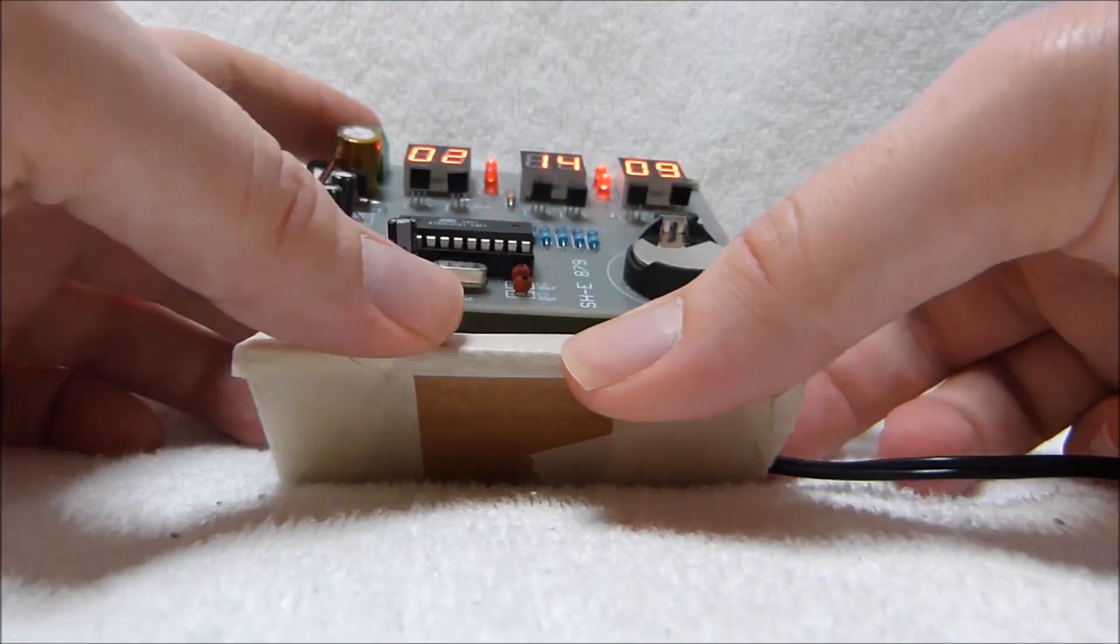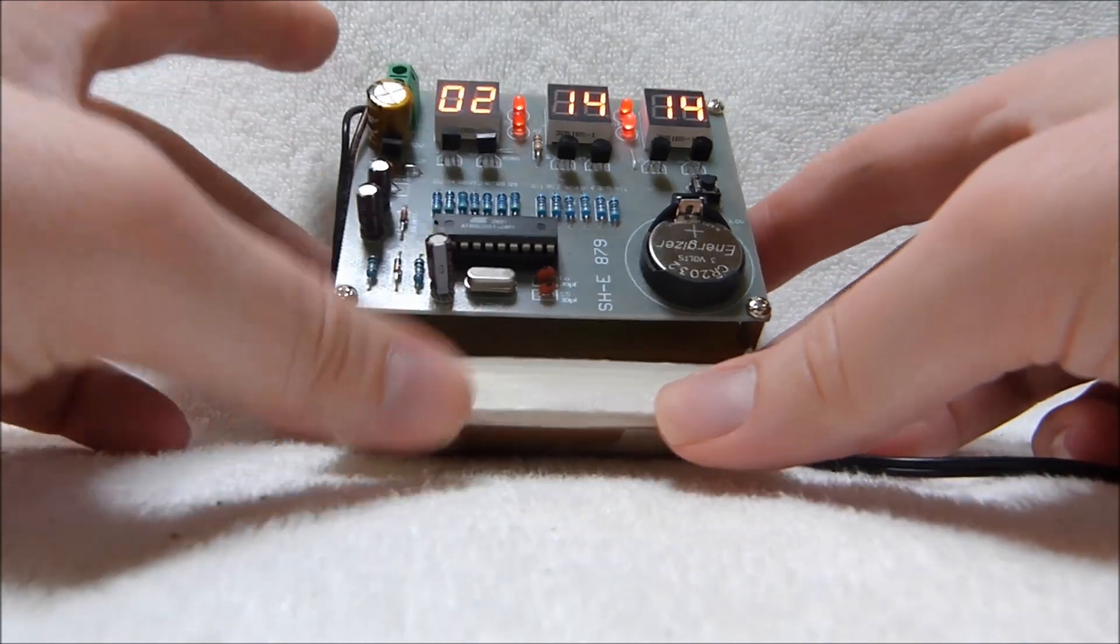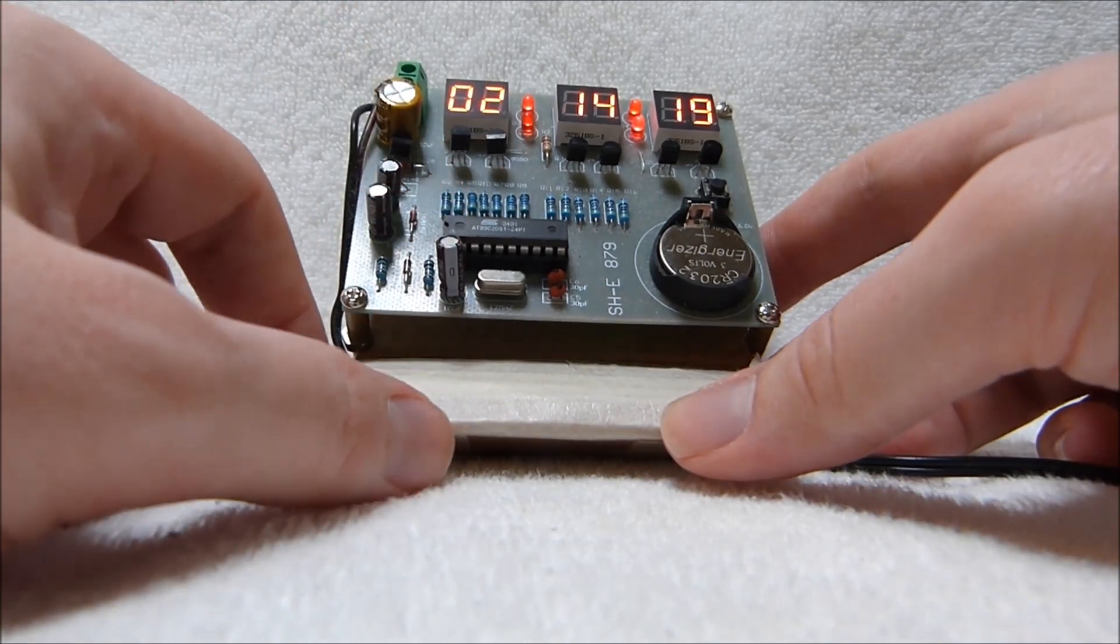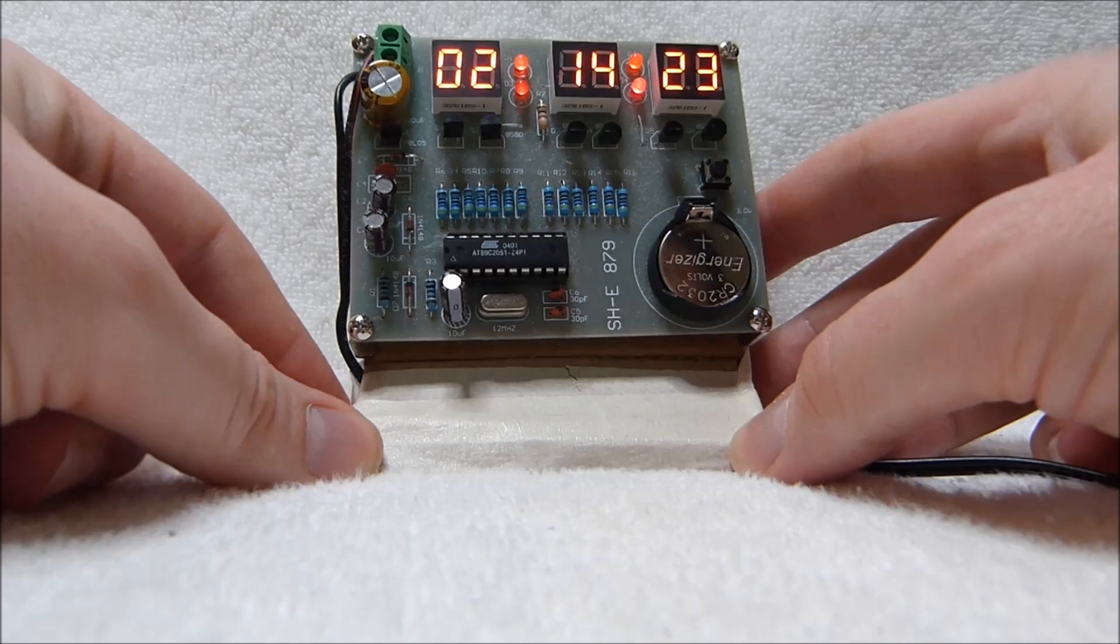Up here are the digit select transistors. This is a multiplexed clock. As you can probably guess from this small processor running it, it just doesn't have enough outputs to directly drive all the digits at once.